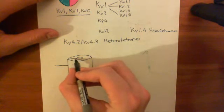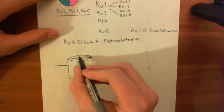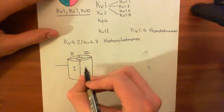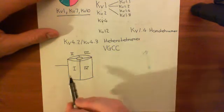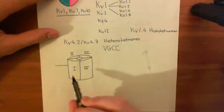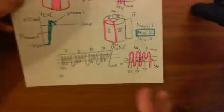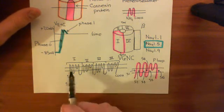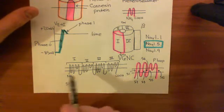The voltage-gated calcium channel, or VGCC, has these four domains, and the membrane-spanning topology of this pore-forming subunit is exactly the same as for the voltage-gated sodium channel. You have these S1 to S6 membrane-spanning regions and a P-loop in each domain. So it's basically exactly the same as the pore-forming unit of the voltage-gated sodium channel.